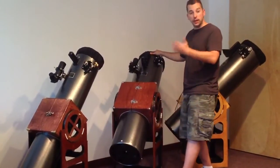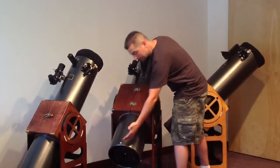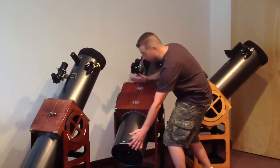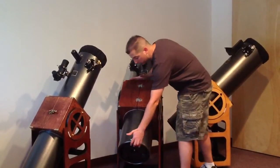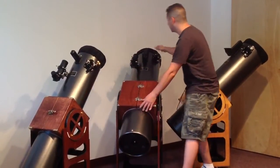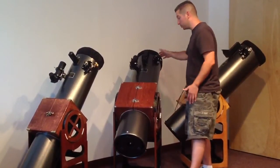Or if we were going back to a lighter eyepiece, we would just do the opposite. We would put a hand back here on the tube and a hand up here, apply some pressure, and push the tube forward to essentially change the balance point.